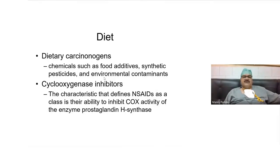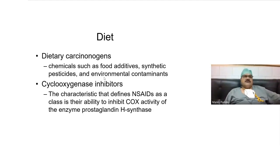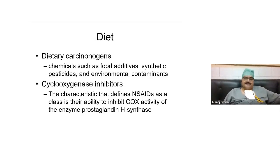Now, the harmful agents in food are called dietary carcinogens — these include food additives, pesticides, fertilizers, and environmental contaminants. They enter the body through diet and are all carcinogenic. This is why there is a growing movement towards organic food — organic food is free of pesticides and fertilizers, so you avoid urea and pesticide exposure through your diet.